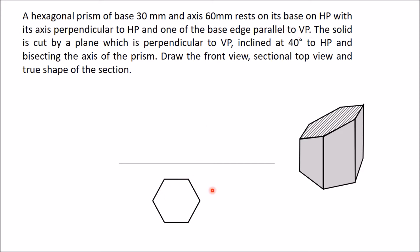Now mark all these corner points - base corner points as A, B, C, D, E, F and top base corner points as G, H, I, J, K, L. Now project all this in front view. The height is given as 60 mm, so take this height as 60 mm.